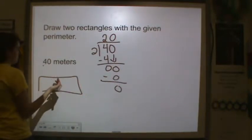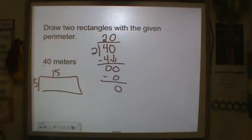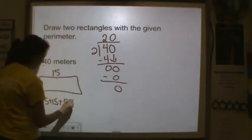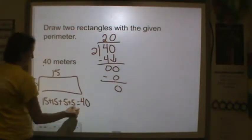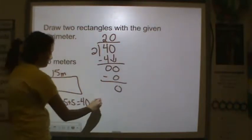What about 15 and 5? That would give you a perimeter of 40 because 15 plus 15 plus 5 plus 5 is equal to 40. So it would be 5 meters and 15 meters. Let's do another one.